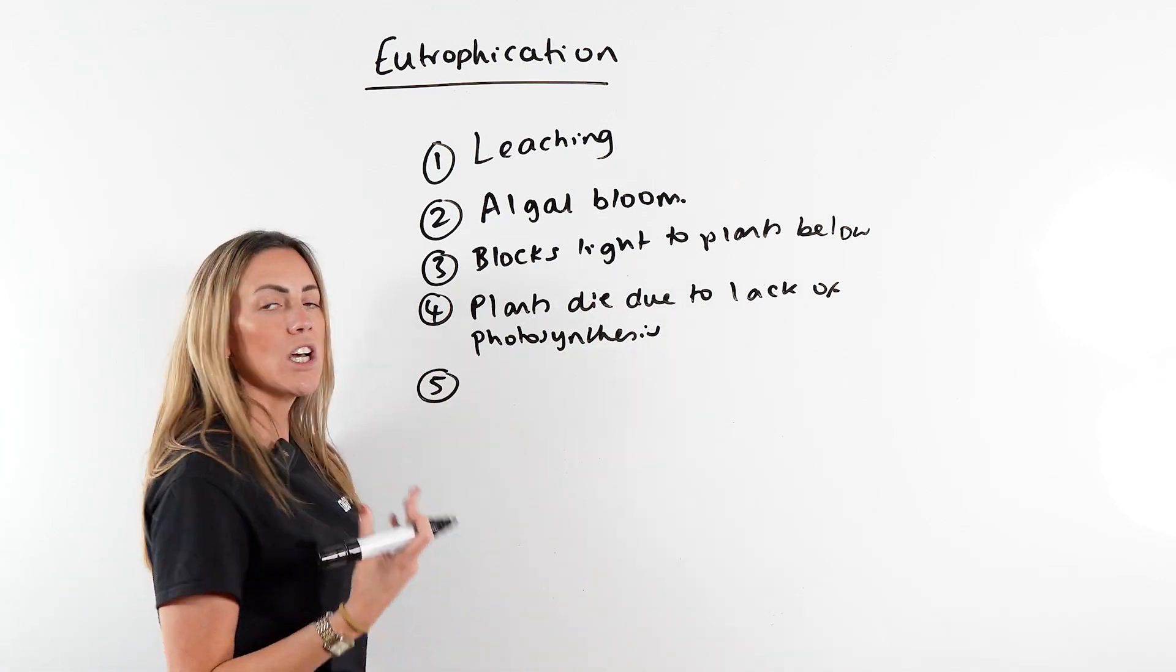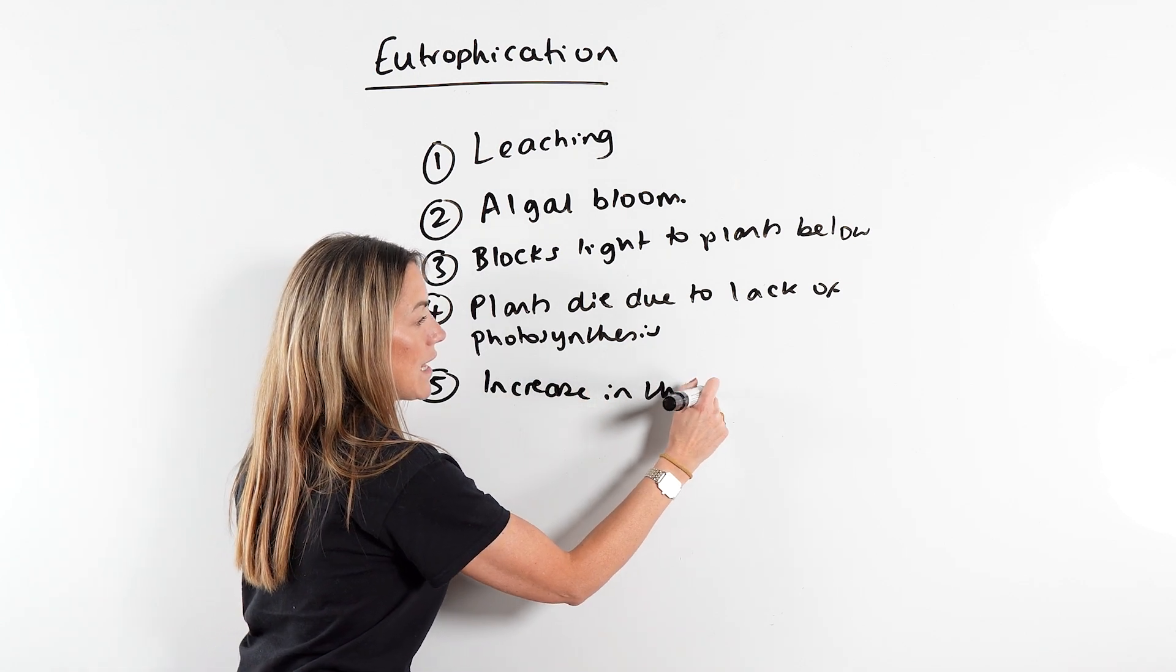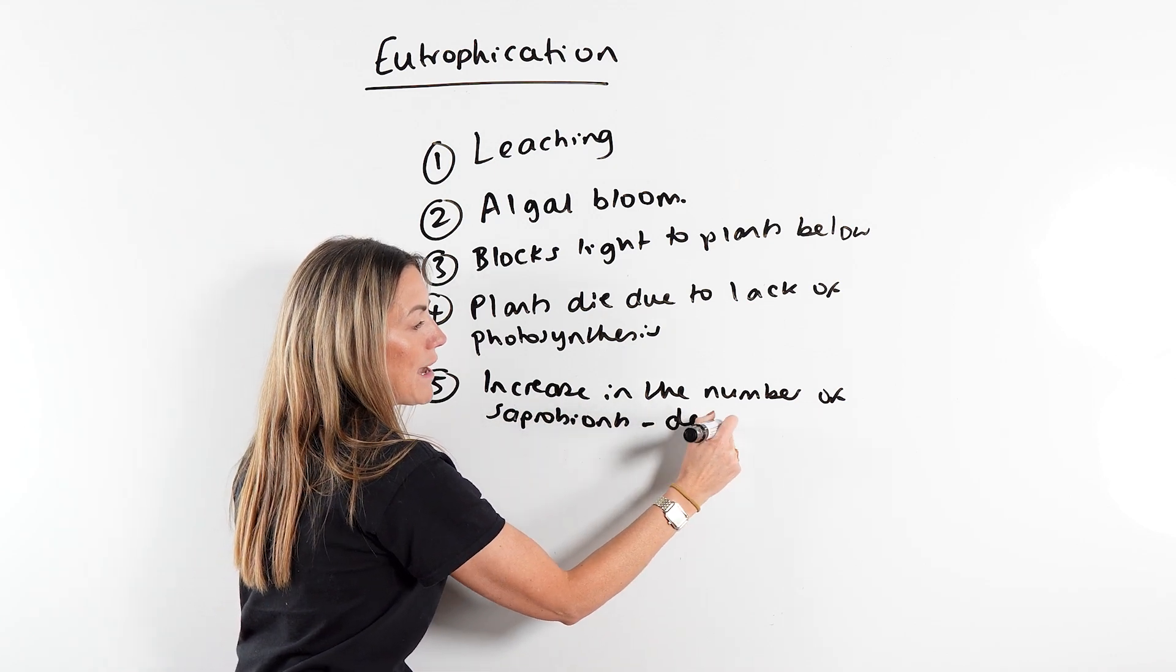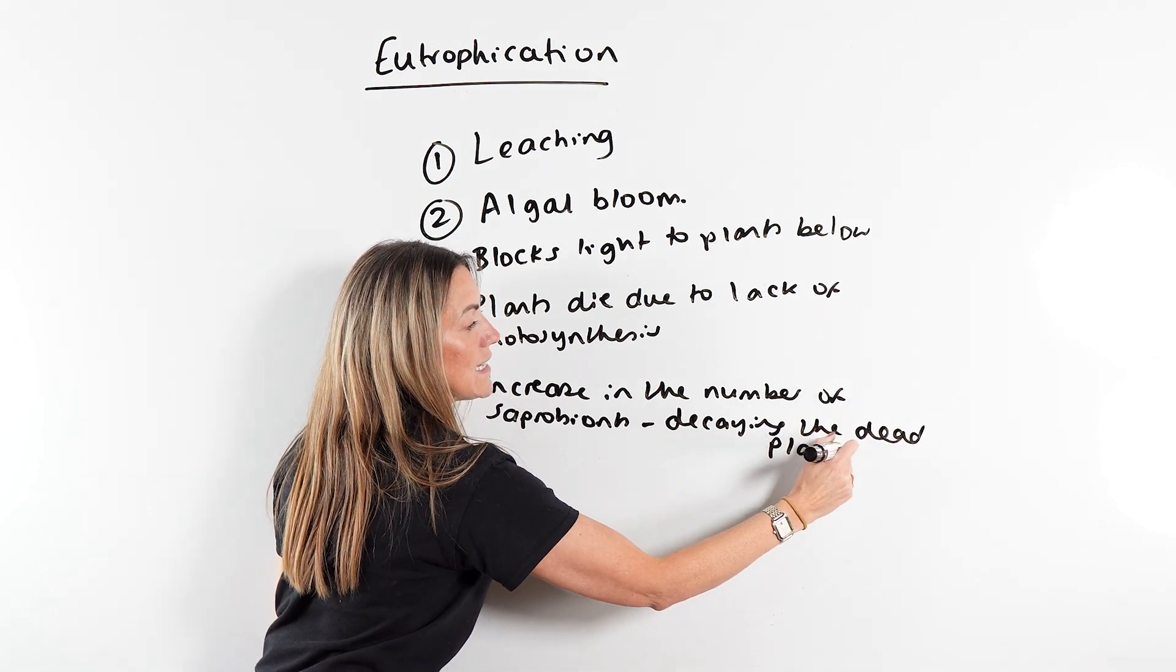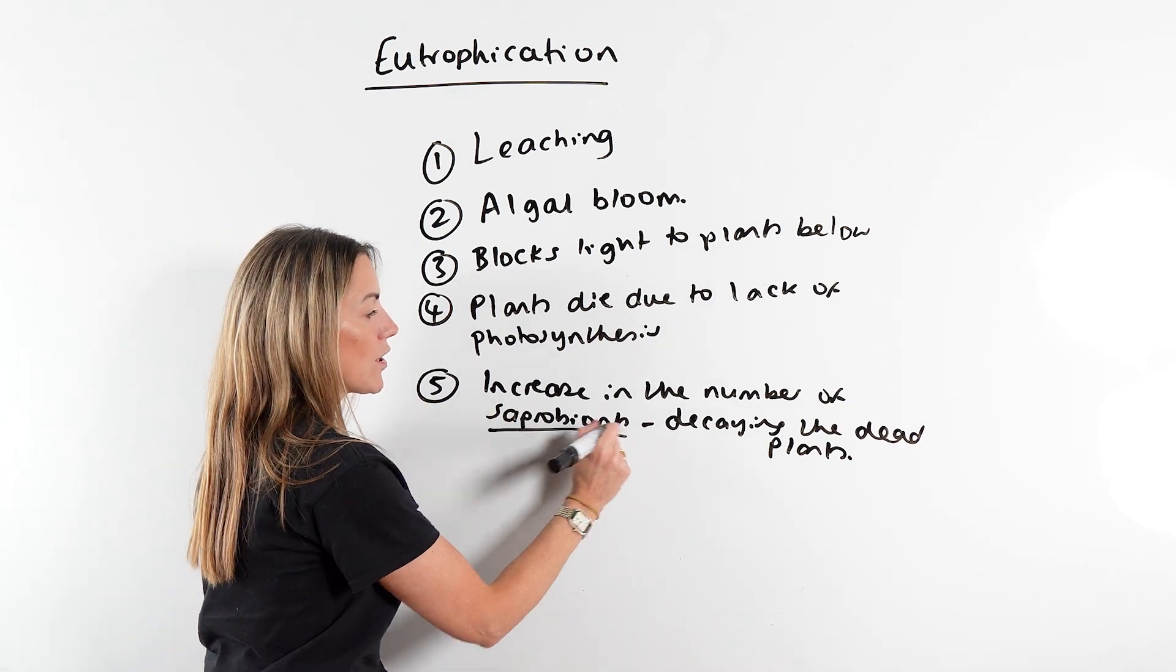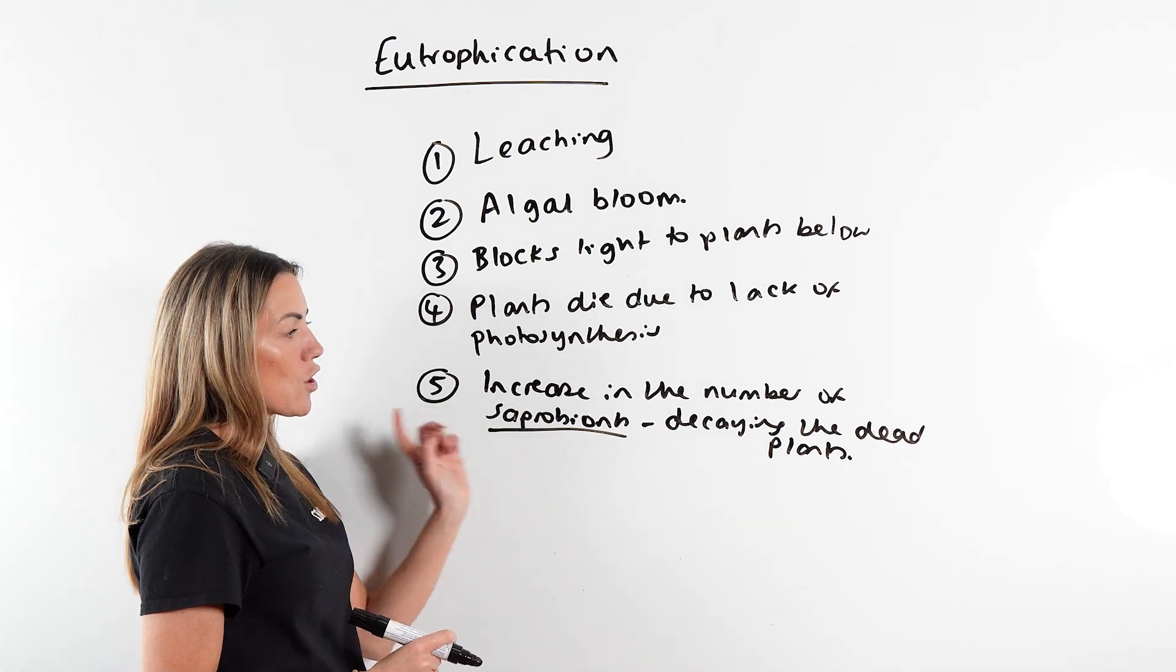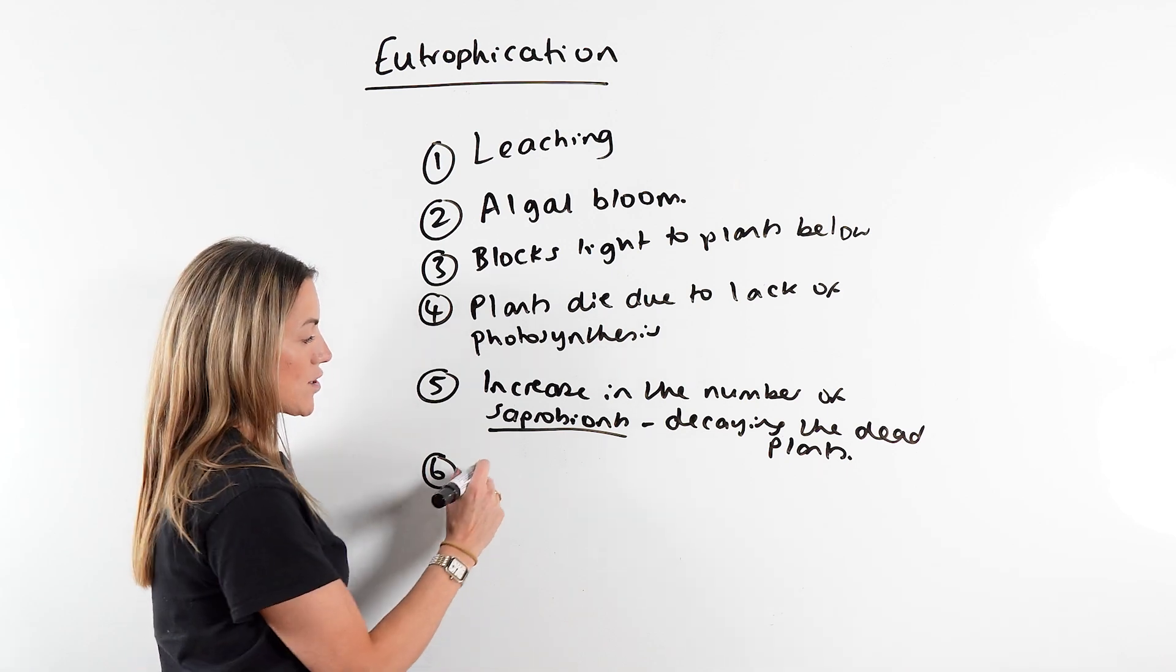Then what's going to happen? Well, because you've got lots of dead plants, you're going to see an increase in the number of saprobionts. Now these saprobionts are decaying the dead plants, and it is important that we say saprobionts and not just decomposers - that's a key word that they are looking for. I suppose it differentiates between GCSE and A-level biology. So you've got an increase in the number of saprobionts, they're decaying the dead plants, but remember the saprobionts are respiring.